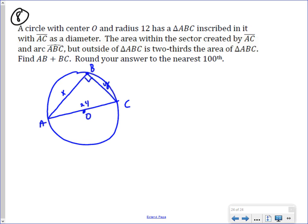So I went ahead and let AB be X and BC be Y, knowing that my goal is going to be to find out what X plus Y is. Whenever I see a right triangle, one of the first things I'm always going to think about doing is the Pythagorean theorem. And so I'm just going to write down X squared plus Y squared equals 24 squared, which in this case is 576.